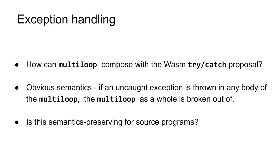Now we get to possibly the major gotcha of the multi-loop proposal. When considering the WebAssembly exception handling proposal, what should happen when a body of a multi-loop throws an exception? The obvious semantics, thinking purely at the WASM level, is for such an exception to break out of the multi-loop as a whole, so that an exception has to either be caught within the body or caught outside the multi-loop as a whole by an enclosing try-catch. However, we must ask the question: is this actually semantics preserving, considering source-level languages or IRs with exceptions that might want to compile to WASM, targeting both multi-loop and exception handling at the same time?